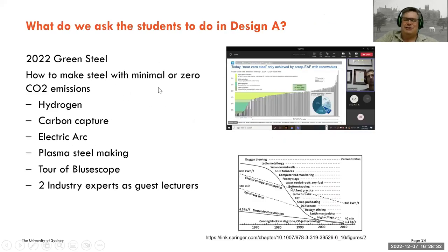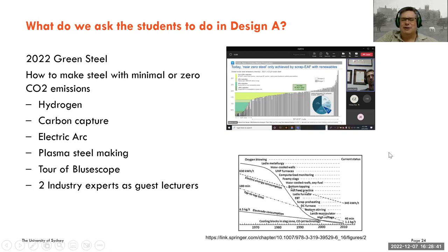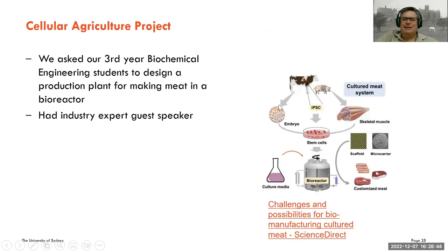Last year we looked at green steel — how can you make steel without a carbon dioxide emission? We had a couple of industry experts and went on a tour of the steelworks in Wollongong. This semester we were looking at cellular agriculture.